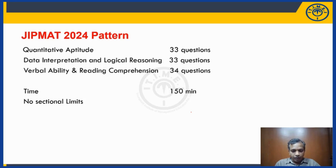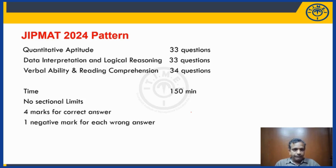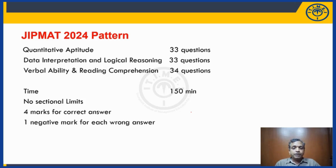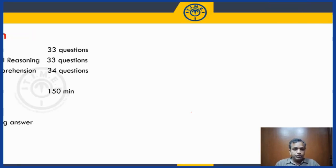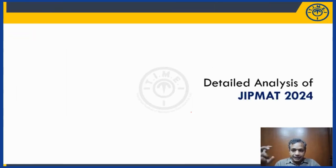The marking scheme is straightforward: each correct answer gives four marks, so the maximum possible score across 100 questions is 400. However, there is negative marking — one mark is deducted for each wrong answer.